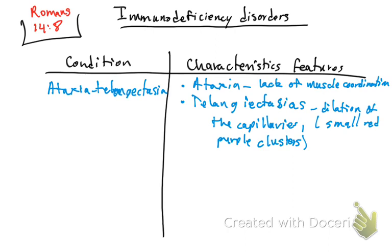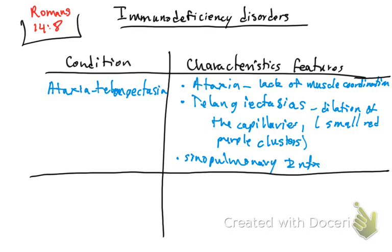When we say lack of muscle coordination, everywhere that we have muscles is going to be affected — your mouth, your speech, your eye movements, swallowing, walking, picking things up, and all other voluntary movements are going to be affected in this patient. Also, this patient is going to have signs of pulmonary infections. So from the name, ataxia = lack of muscle coordination, telangiectasia = dilation of capillaries, and the third characteristic is pulmonary infections.